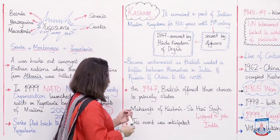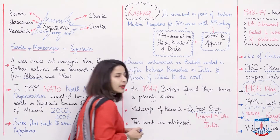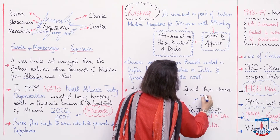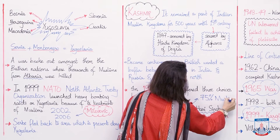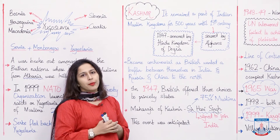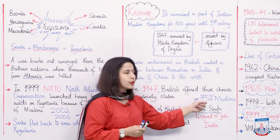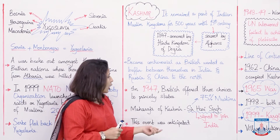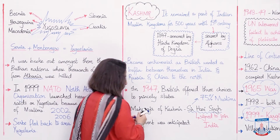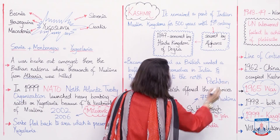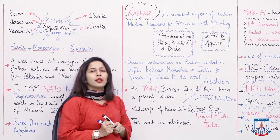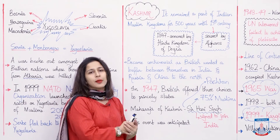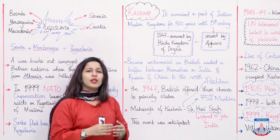At that time, the king of Kashmir was Sir Hari Singh. He chose to be independent. But a very important thing was that the majority of the population — 75% — was Muslim. The ruler of that area was a Hindu, and the people under him were 75% Muslims. Muslims began to raise their voices; they wanted to become a part of Pakistan. The people of Kashmir tribesmen began to enter this area.